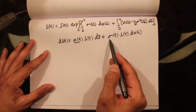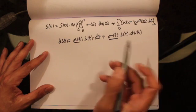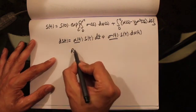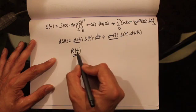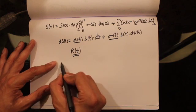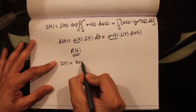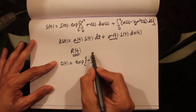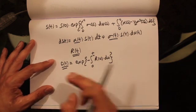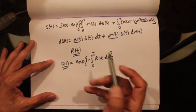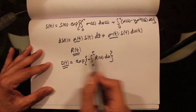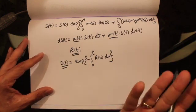Now let's consider another interest rate process which is also adapted — this is an interest rate process. Let's also define a discount process D(t), equal to the exponential of minus the integral from 0 to t of r(u) du. This is called the discount process and it gives you the present value of a dollar received at some future time t. So if you receive a dollar at time t, this equation gives the present value of that dollar.